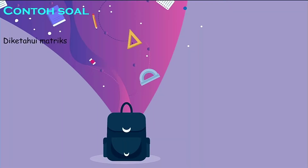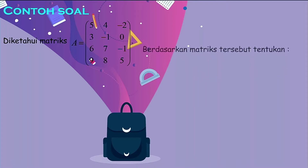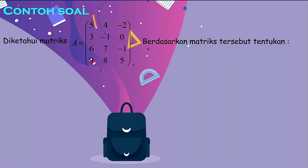Jadi, apa yang dimaksud dengan ordo sebuah matriks? Ordo matriks adalah bilangan yang menunjukkan banyaknya baris dan banyaknya kolom. Penamaan pada ordo matriks tidak boleh dibalik — harus disebutkan dulu banyak baris, baru banyak kolom. Contoh soal: misalkan diketahui matriks A terdiri dari 5, 4, −2, 3, −1, 0, 6, 7, −1, 9, 8, 5. Banyaknya baris: yang mendatar atau horizontal, ada 1, 2, 3, 4 — maka banyaknya baris ada 4.